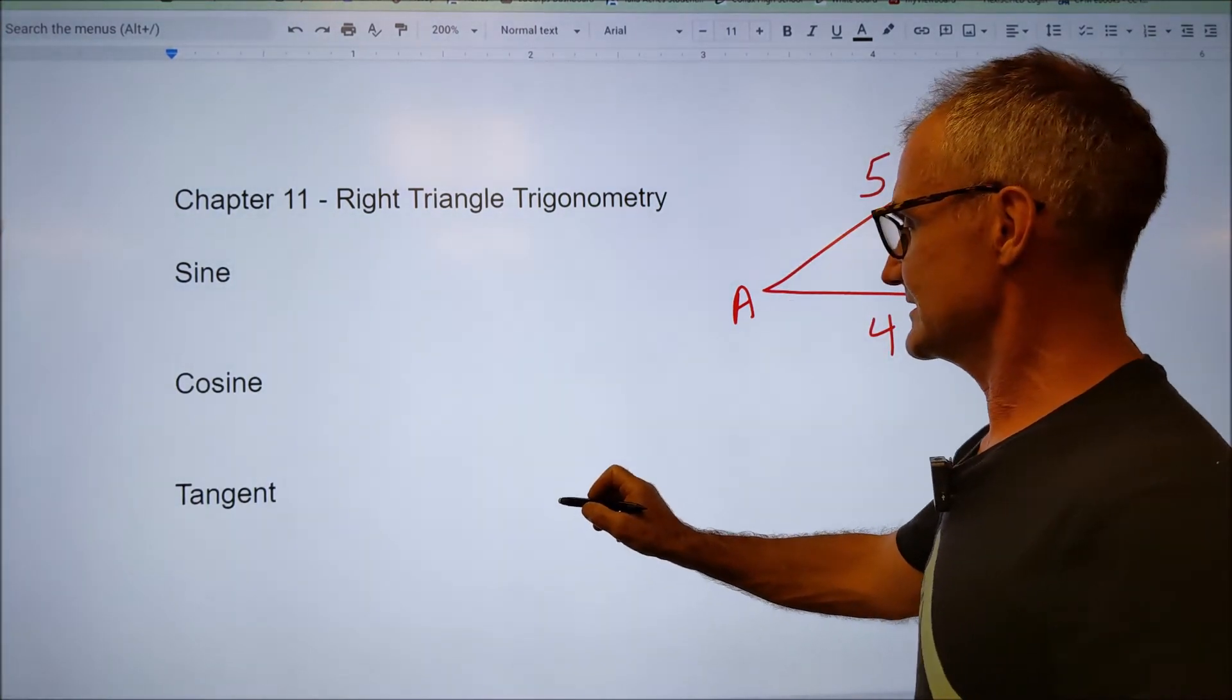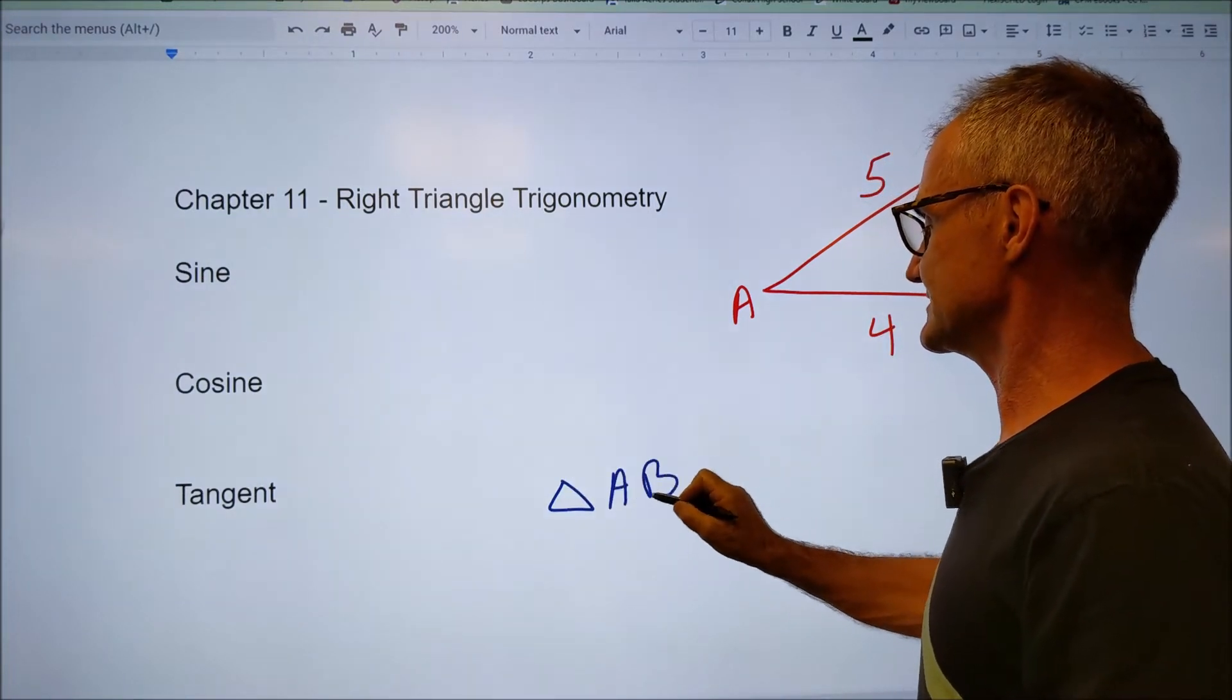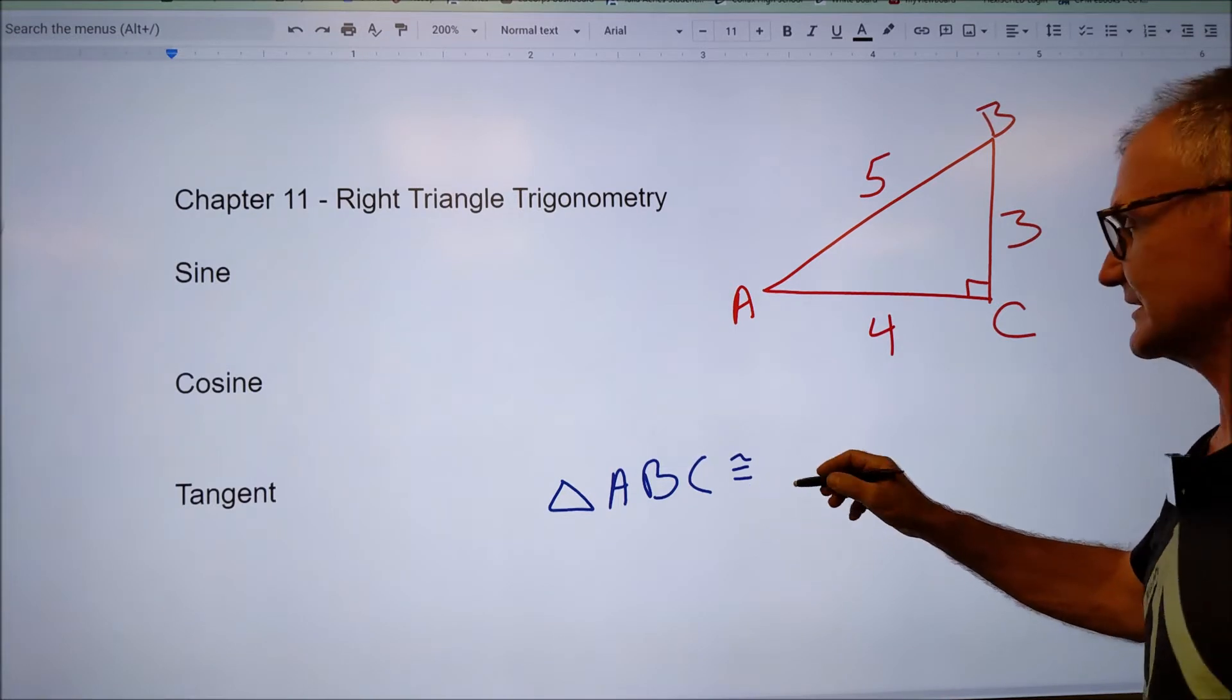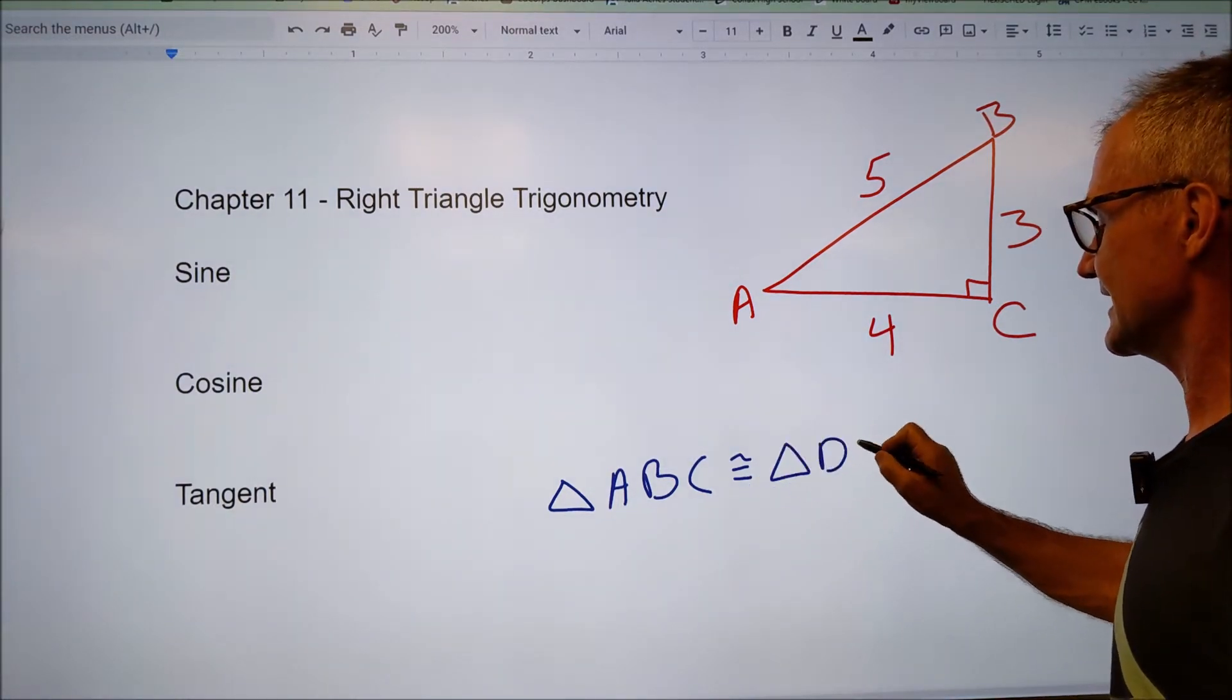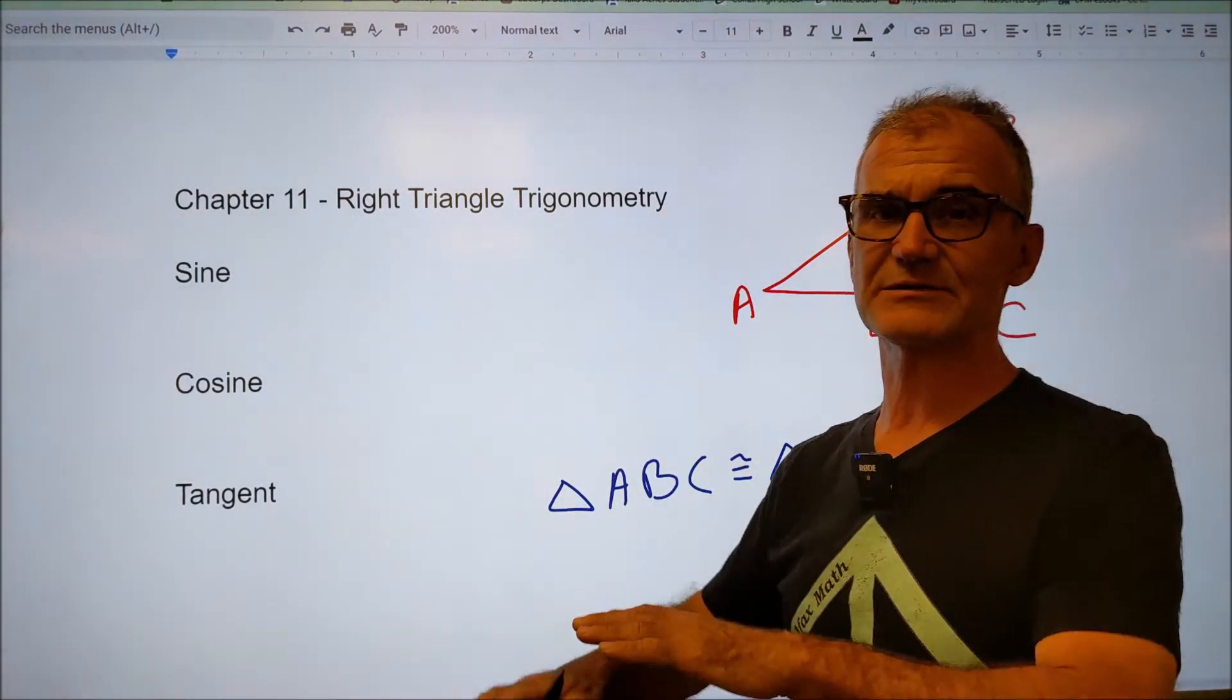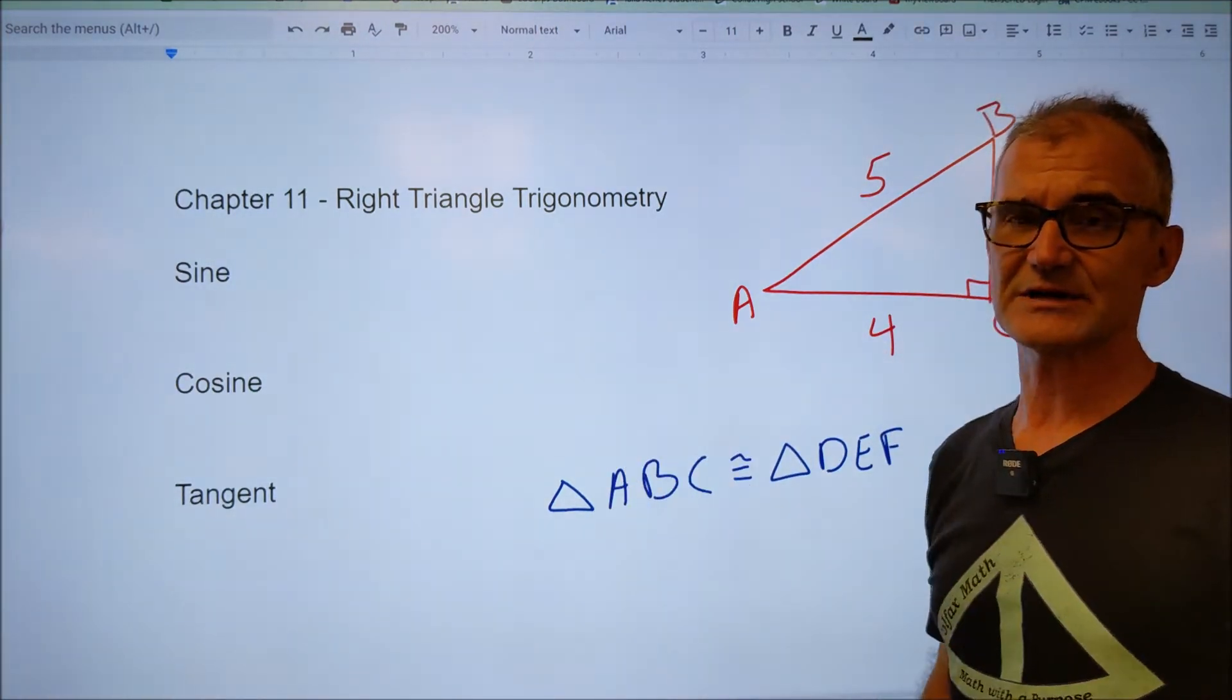This notation right here means triangle. If I have triangle ABC is congruent with that little squiggle line above the equal sign to triangle DEF, that means they are identical. Every angle is the same, and every side is the same, and every part of them is the exact same measure.